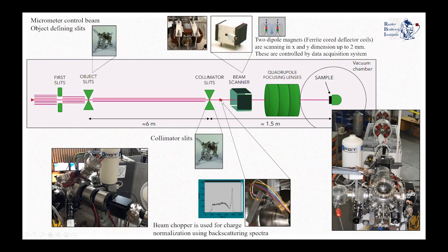This beam chopper provides a means to normalize the beam particle flux. When someone does material analysis, they need to know how many particles hit the target, and this chopper gives us that information. It consists of one stepper motor which moves and intercepts the beam by moving an aluminum sheet with a gold thin layer on top. By measuring the backscattered particles and integrating this spectrum, one can obtain the number of impingent particles.